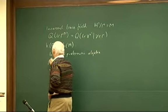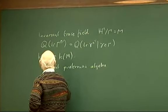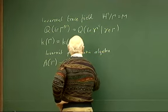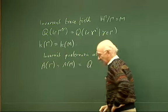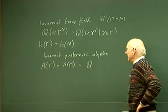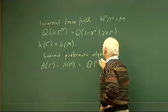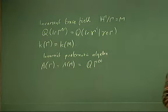The invariant trace field, which we denote by A(γ) or A(M), is the algebra generated over Q by the group γ². So it's linear combinations, Q-multiples of elements of γ².